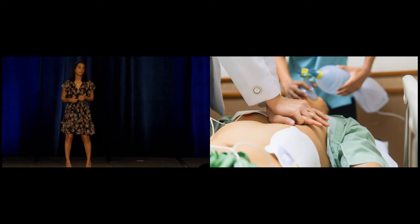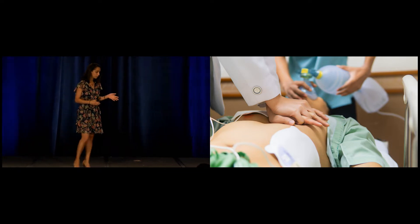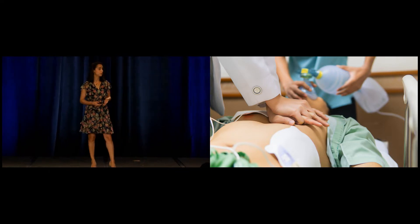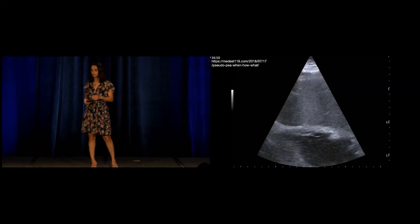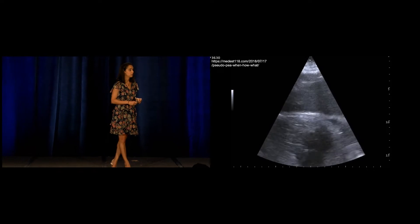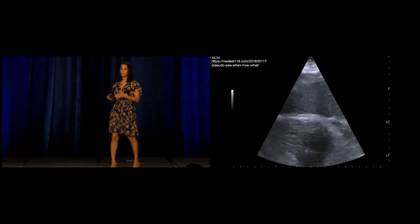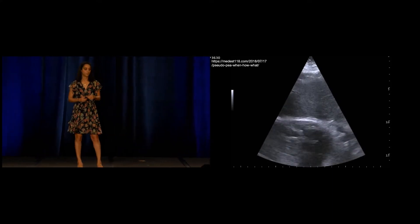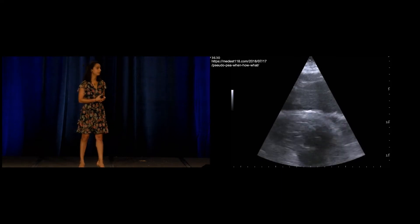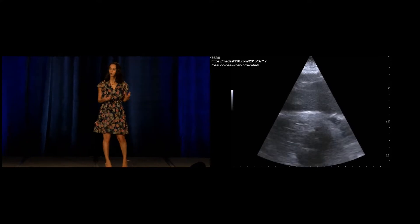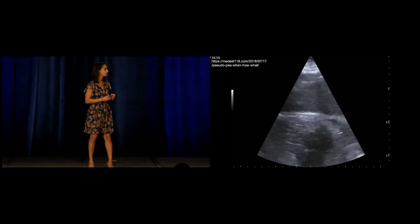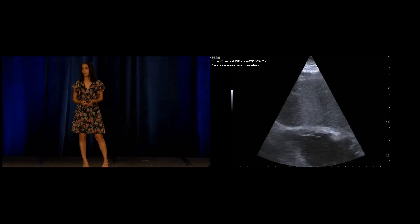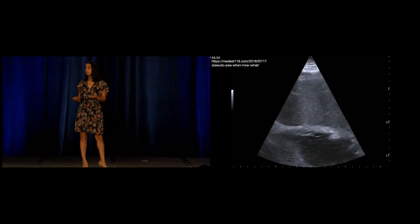When he arrived at county, he was in PEA arrest. We transferred him to the hospital gurney, resumed CPR, and got the ultrasound machine to the bedside. It's PEA because it's pulseless and there was electrical activity on the monitor. However, when you take a look with the ultrasound, there's some activity — it looks like it's actually organized. It's not fibrillation. There's something going on. So why was this patient generating some cardiac output but not producing a pulse?